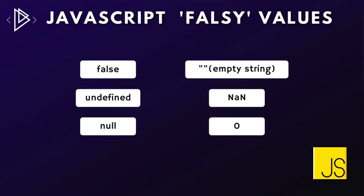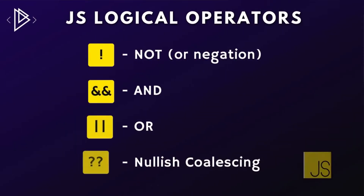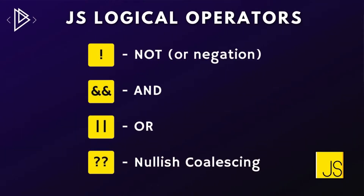When we perform certain operations, non-boolean values are turned into boolean values, and we perform these operations with logical operators. In JavaScript, there are four altogether: not, or negation, and, or, and finally the latest logical operator, which is called the nullish coalescing operator. We'll look at this one in a lot more detail in the next lesson. In this lesson, though, we're just going to be focusing on the first three.